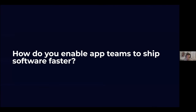Framing the problem statement for enabling developer self-service: the ultimate question is how do you enable app teams to ship software faster? For any organization, if you can ship code faster, you can respond to user feedback more quickly, be more competitive against other products, and delight your users faster. When I've talked to these hundreds of organizations — when you strip it all away — this is really what they're after.